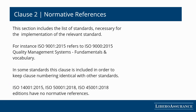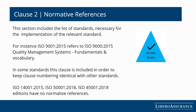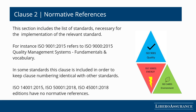Clause 2 contains the list of standards necessary for the implementation of the relevant standard. For instance, ISO 9001:2015 refers to ISO 9000:2015 for the fundamentals and vocabulary used in the standard. While in ISO 14001:2015, ISO 50001:2018, and ISO 45001:2018, there are no normative references.